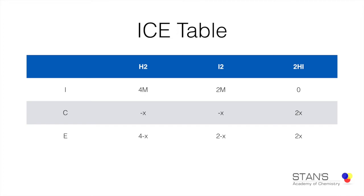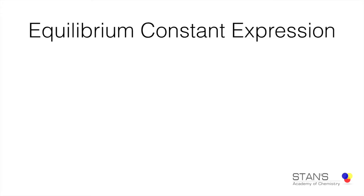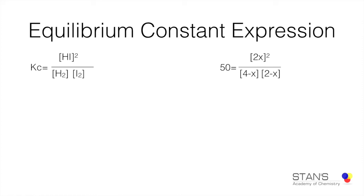We have now generated the ICE table. Next, we calculate the value of X using the equilibrium constant expression. The expression is Kc = [HI]² / ([H₂][I₂]). Substituting the values: 50 = (2X)² / ((4 − X)(2 − X)), since the coefficient of hydrogen iodide is 2.